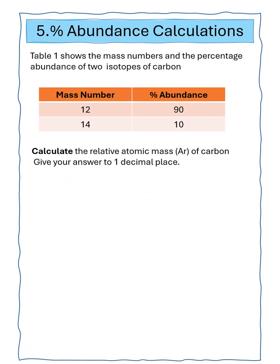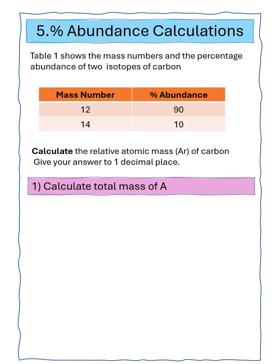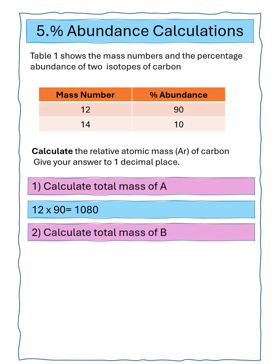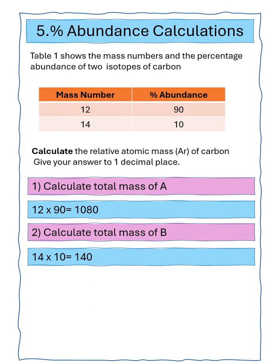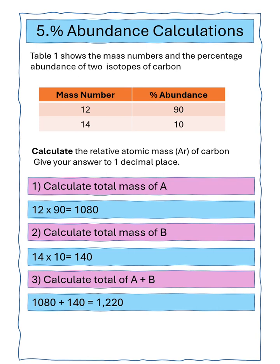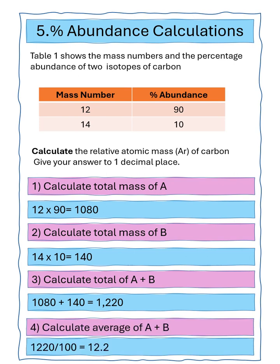Question five says table one shows the mass number and percentage abundance of two isotopes of carbon. We've got to calculate the relative atomic mass of carbon, giving our answer to one decimal place. Isotope A: mass number 12, abundance 90%, total 1080. Isotope B: mass number 14, abundance 10%, total 140. The total of A and B is 1220. Dividing by 100% gives an average atomic mass of 12.2.